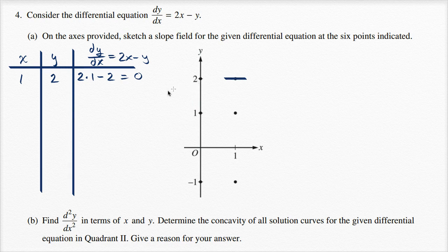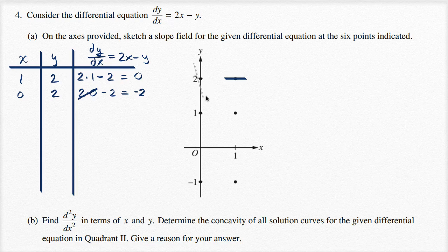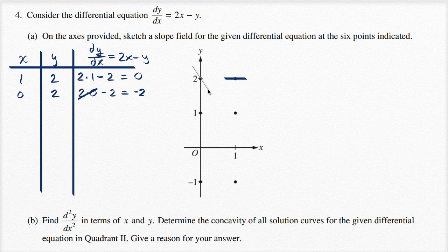Let's look at this point where x is equal to zero, y is equal to two. The derivative is going to be two times x minus y, so it's going to be zero minus two, which is equal to negative two. A slope of negative two goes from the top left to the bottom right — it's going to be pretty steep. As I move one to the right, I move two down, so it looks something like that.